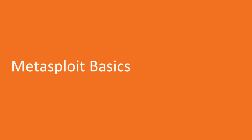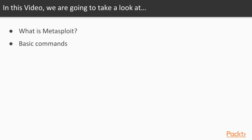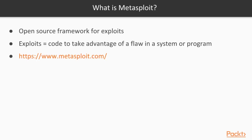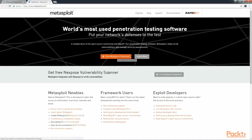Metasploit Basics. In this video, we're going to take a look at what Metasploit is and some basic commands to use. Metasploit is an open source framework for exploits. An exploit is usually code to take advantage of a flaw in a system or program — what happens during a pen test when you try to penetrate a network or host. You can get more information at www.metasploit.com, where you'll find a free download. It runs on Windows as well as Linux.